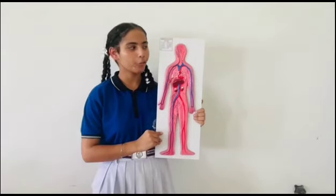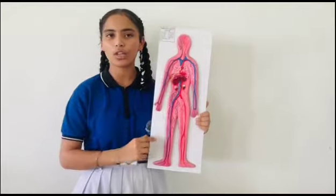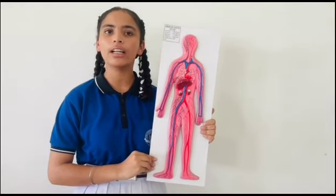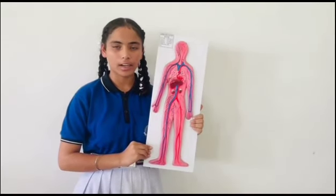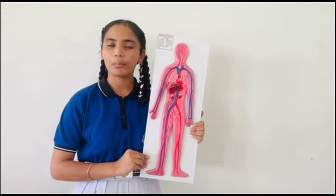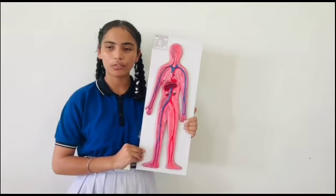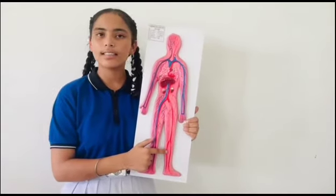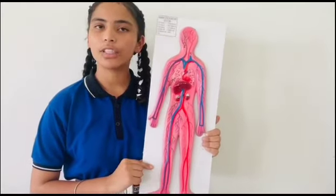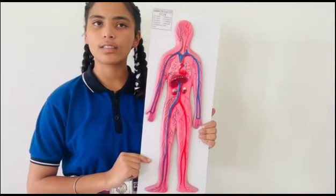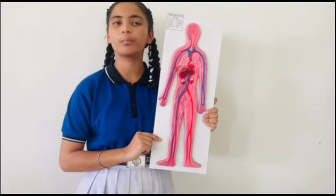This is a model of the human circulatory system. This is the heart. The heart has four chambers: left ventricle, right ventricle, left atrium, and right atrium. The heart helps in pumping blood to all parts of the body. This is an artery and this is a vein. The artery carries oxygenated blood and the vein carries deoxygenated blood.